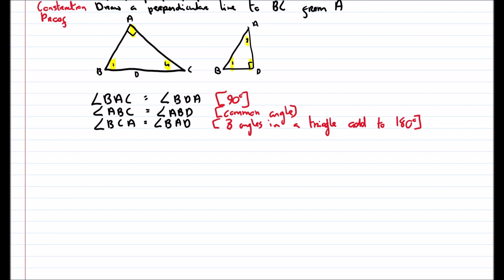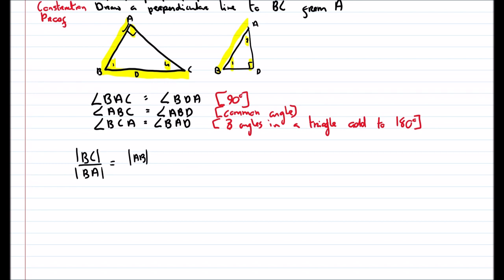Now I'm going to use the properties of similar triangles. I'll take the hypotenuse of each triangle and put the big one over the small one. So BC over BA equals AB over BD. What I'm saying is the ratio of line BC to BA is the same as the ratio of line AB to BD. Now I'm going to get the common denominator — multiplying both sides by BA times BD. The BA's cancel on the left and the BD's cancel on the right, leaving me with BD times BC equals AB times BA.